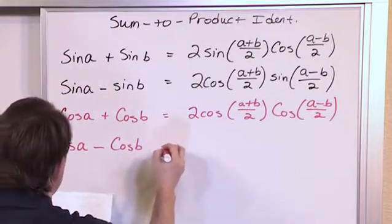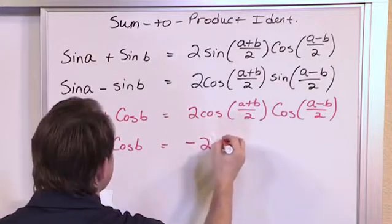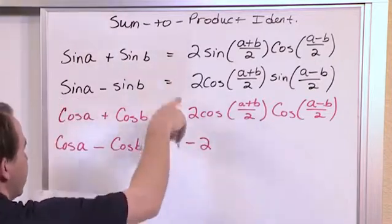And we'll see symmetry here when we do cosine of A minus cosine of B which is negative 2, you have to put a negative here, that's the only difference with any of these guys here.